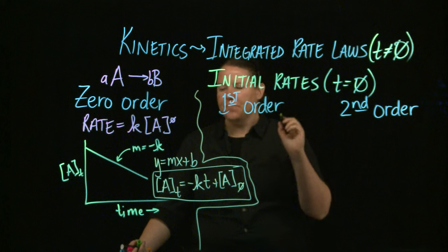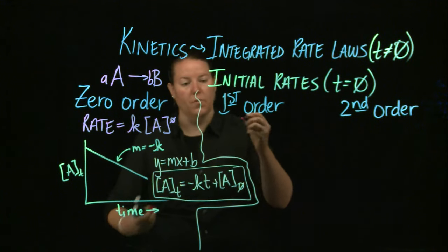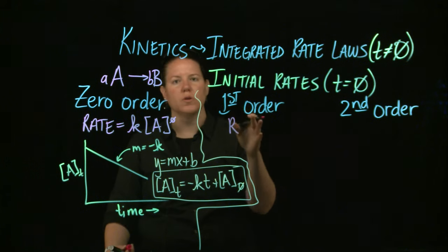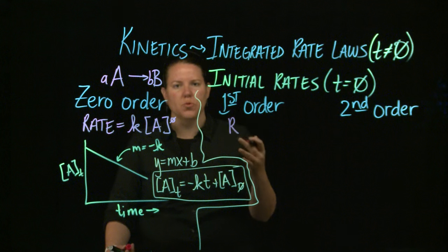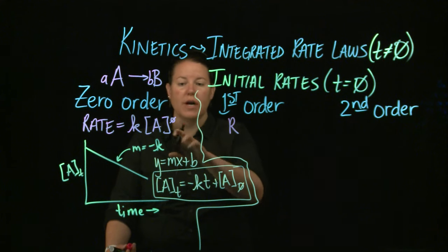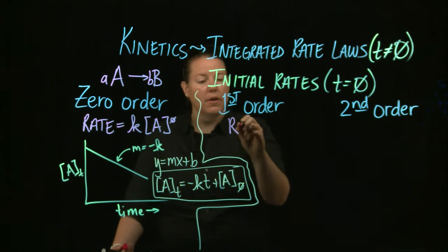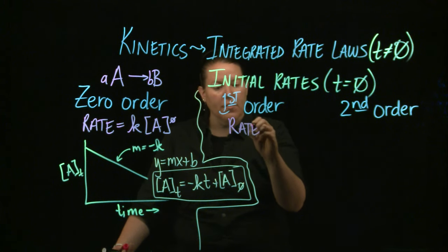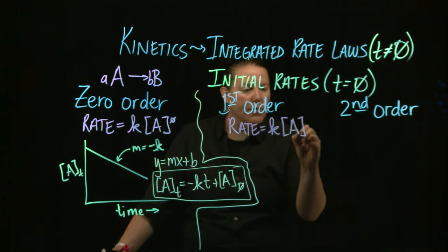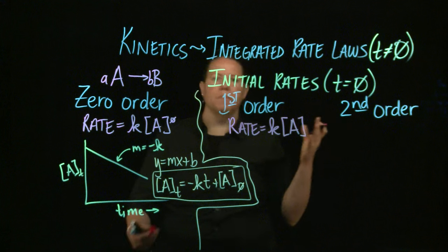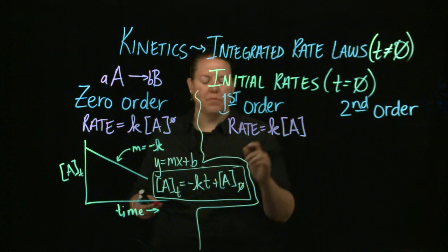First order integrated rate law. Again, we need to talk about what the rate looks like. So the rate, when we say first order, we're basically saying what the overall reaction order is. If you remember what the overall reaction order was, it was these superscripts for all of the reactants added together. And so here, if there's only one reactant, then that means that that reactant must be to the first power, which I'm not going to write because typically in chemistry we don't have to write it.